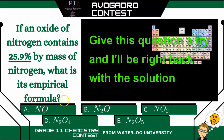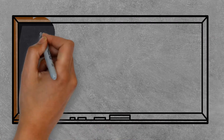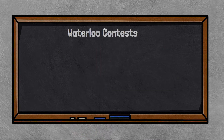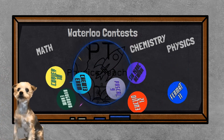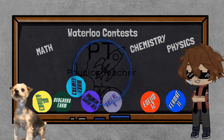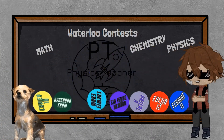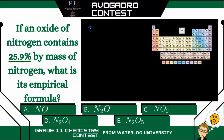Give it a try, and I'll be right back with the solution. So if we have 25.9% concentration of nitrogen, and this contains nitrogen and oxygen, then subtract that from 100, and we would have 74.1% of oxygen.